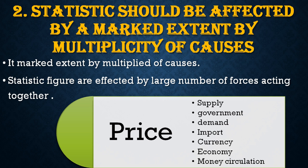Similarly, a product or a crop is affected by rainfall, moisture, land, fertilizer, etc. Therefore, anything is affected to a marked extent by multiplicity of causes.